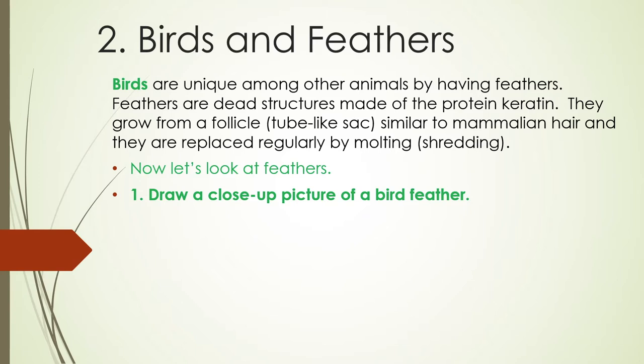Birds are unique among other animals by having feathers. Feathers are dead structures made of protein keratin. They grow from a follicle — a tube-like sac similar to mammalian hair — and they are replaced regularly by molting, which is shedding.